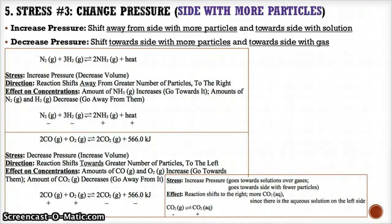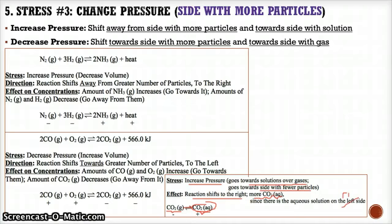Final pressure example: CO₂(g) ⇌ CO₂(aq). If we increase pressure, we don't want gas — we want the aqueous solution. So the reaction shifts towards the CO₂(aq) on the right. The concentration of CO₂(aq) increases since we're shifting towards it and producing more. The concentration of CO₂(g) on the left decreases since we're shifting away from it and consuming it.